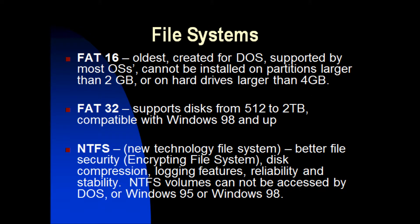There are three types of file system. First, FAT16: the oldest, created for DOS, supported by most operating systems, but cannot be installed on a partition larger than 2GB or a hard drive larger than 4GB. Second, FAT32: supports disks from 512MB to 2TB, compatible with Windows 98 and up. Third, NTFS (New Technology File System): a more capable file system with logging features, reliability, and stability. NTFS volumes cannot be accessed by DOS, Windows 95, or Windows 98.